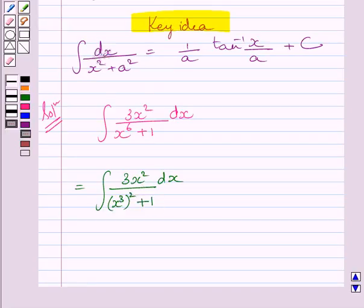Now we know 3x² is the derivative of x³. So we will substitute x³ = t.